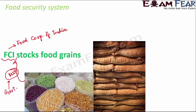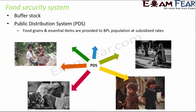FCI then stocks all these food grains. So the main function of FCI is to take food grains from farmers at MSP — the Minimum Support Price — and then stock the food grains properly for distribution.